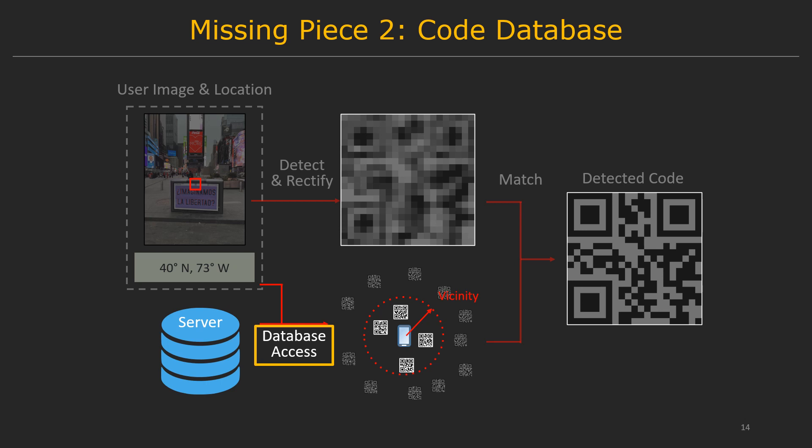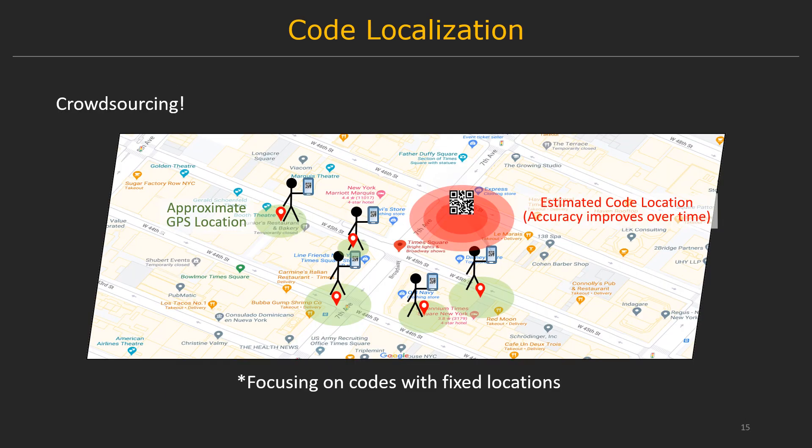The second missing piece is the code database — specifically, how do we get a database of nearby codes? Fortunately, this can be done by crowdsourcing. Every time a user scans a code, the GPS location of the user can be used to update and refine the estimate of the code location. Therefore, as more and more users scan the code, the accuracy of the code location keeps improving. Note that so far we have been focusing on codes with fixed locations, such as QR codes in restaurants, museums, and so on.